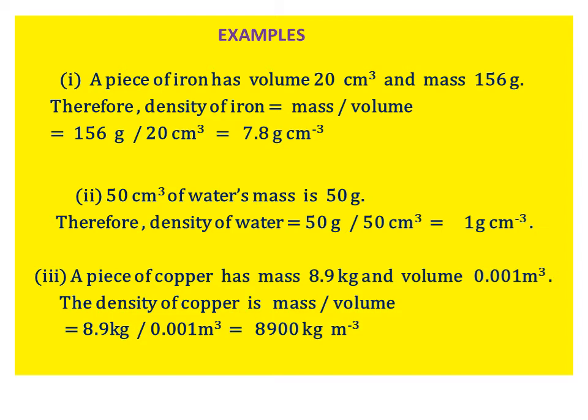Example 2. 50 centimeter cube of water's mass is 50 grams. Therefore, density of water is equal to 50 grams divided by 50 centimeter cube, equal to 1 gram per centimeter cube.